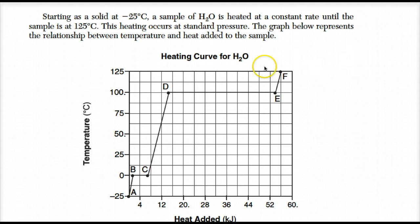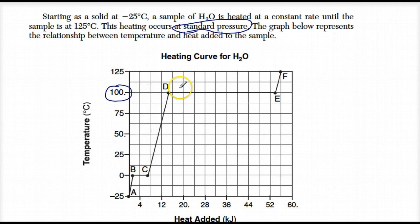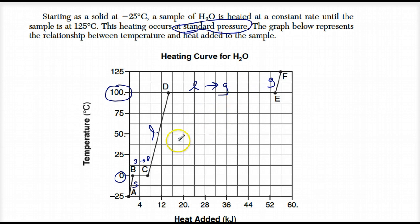Number 57 involves the heating curve for water, starting at negative 25°C and finishing at 125°C at standard pressure. At 100°C the liquid goes to a gas — that's boiling. At 0°C the solid goes to a liquid — that's melting. From A to B it's all in the solid phase; from C to D all in the liquid phase; and from E to F all in the gas phase. You should know these parts of the graph solidly.